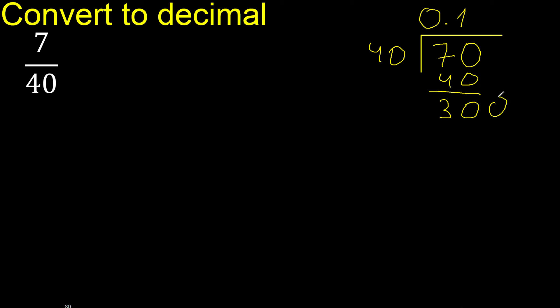Therefore we complete again with 0. The decimal point is already placed. We now have 300. What number does 40 multiply by to get closest to 300?